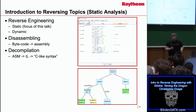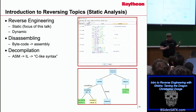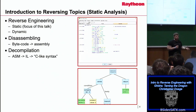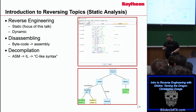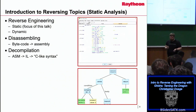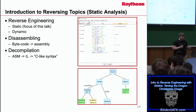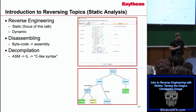Disassembling is taking bytecode and bringing it back up to assembly. When you execute a binary — an ELF or MZ format — it has opcodes your computer interprets, and disassembly brings those back to assembly. In the case of Java apps, it brings DEX bytecode back to Java syntax. Decompilation goes further: assembly to an intermediate language (IL), which is a step before you get to a C-like syntax, abstracting the assembly to provide flow control and analysis.